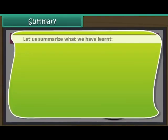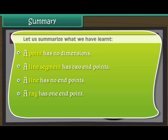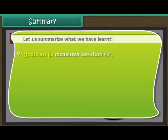Let us summarize what we have learnt. A point has no dimensions. A line segment has two endpoints. A line has no endpoints. A right angle measures 90 degrees. An acute angle measures less than 90 degrees. An obtuse angle measures more than 90 degrees.